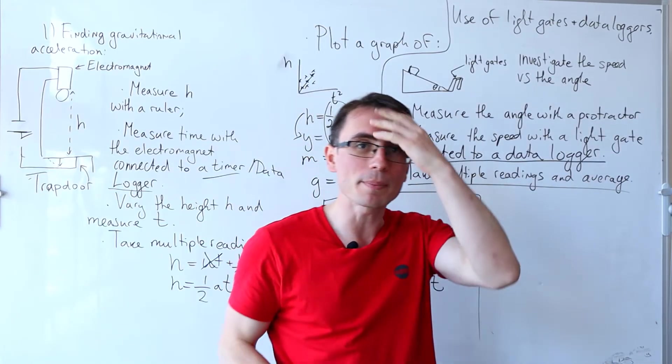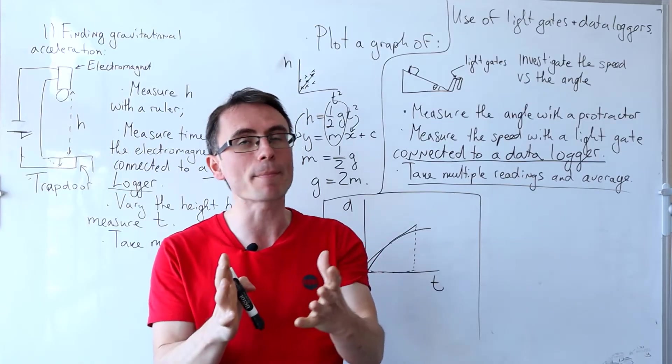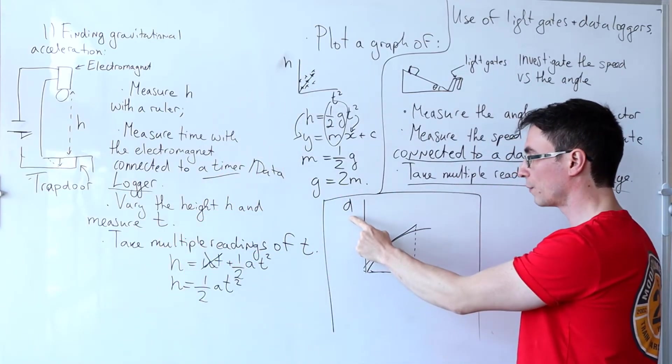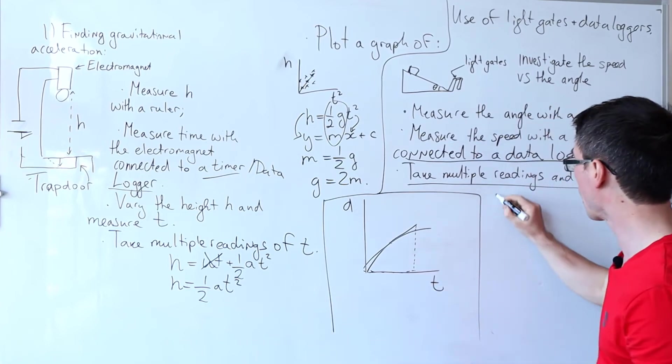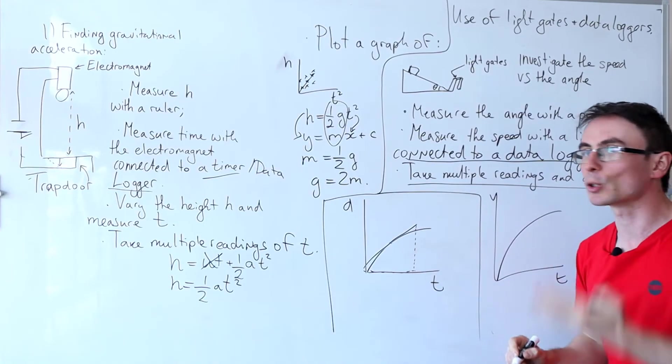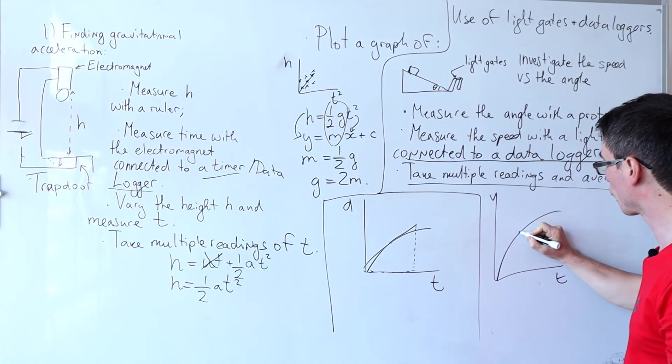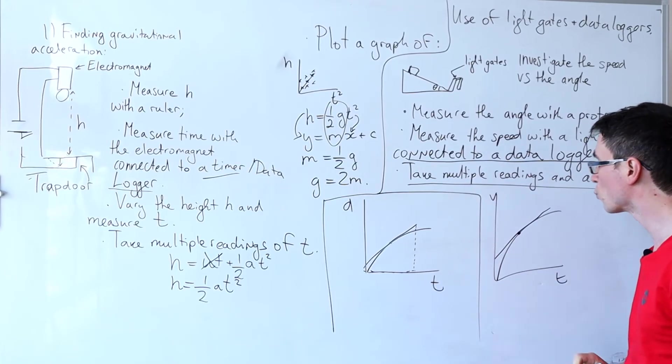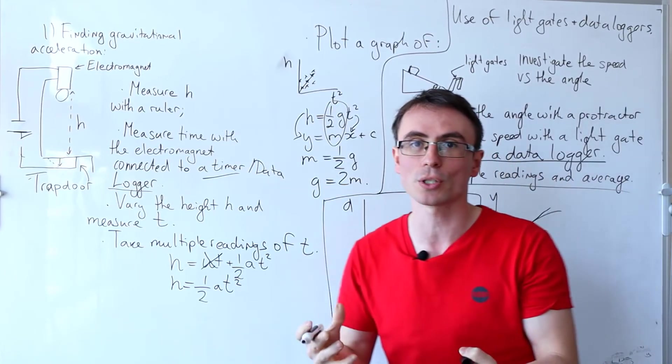One more thing that is really important. Very often we get sample data in these questions and if we're given a graph of displacement against time or something like velocity against time and if this graph is not a straight line, if we wanted to find the acceleration at a certain point, then we need to draw the tangent to that point.